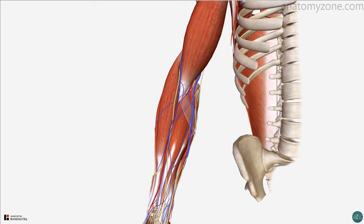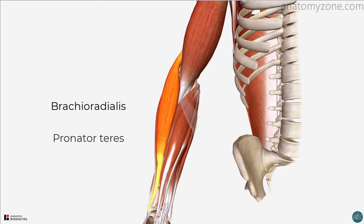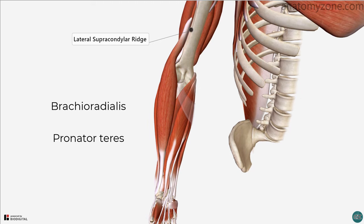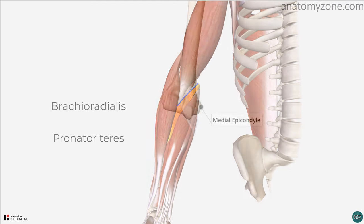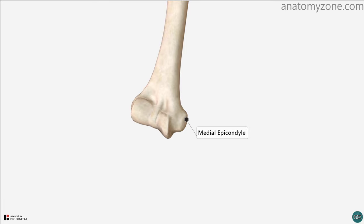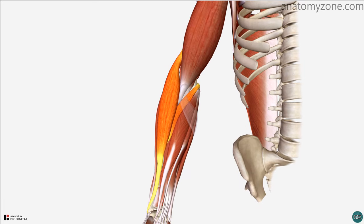The sides of the triangle which make up the cubital fossa are comprised of two forearm muscles, the brachioradialis and the pronator teres. The lateral border of the cubital fossa is made up of the medial border of the brachioradialis, which originates from the lateral supraepicondylar ridge of the humerus. Its medial border is made up by the lateral border of pronator teres, which itself originates from the medial epicondyle of the humerus. The apex of the triangle is formed where the two muscles meet inferiorly.